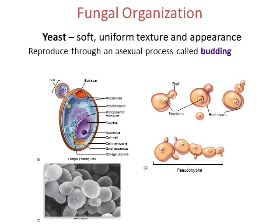The yeast form has a soft, uniform texture and appearance. Yeast reproduces asexually by a process called budding. The yeast cell has a nucleus and different organelles, confirming it's a eukaryotic cell. In budding, the cell reproduces all its chromosomes, creating two copies, splits up its organelles, and puts them into a new cell called a bud. The bud grows over time and eventually breaks off. Or the cells can stay attached to each other, forming what's called pseudohyphae — a fake hyphae-looking structure — though each cell is still an individual round organism, not a true filament.